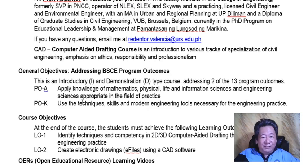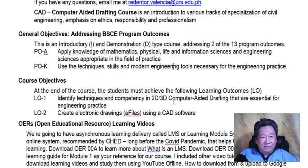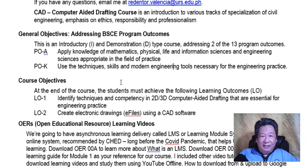General Objectives address the BS Civil Engineering Program Outcomes. This course is an introduction and demonstration type course addressing two of 13 outcomes. Program Outcome A is that you are able to apply knowledge of mathematics, physical, life, and information sciences, and engineering sciences appropriate in the field of practice.